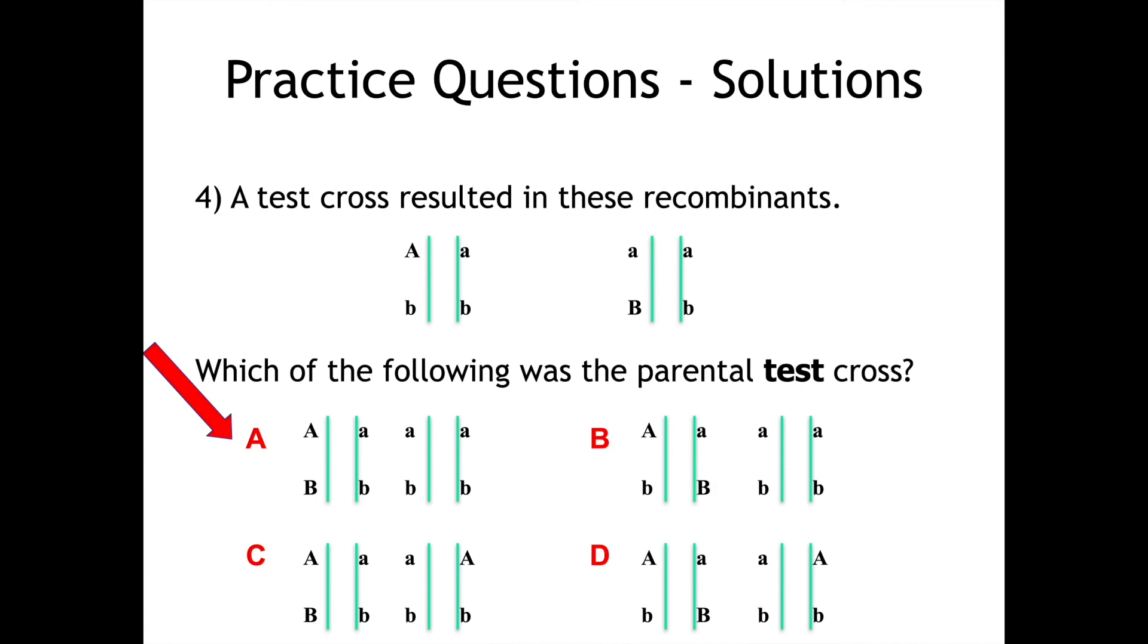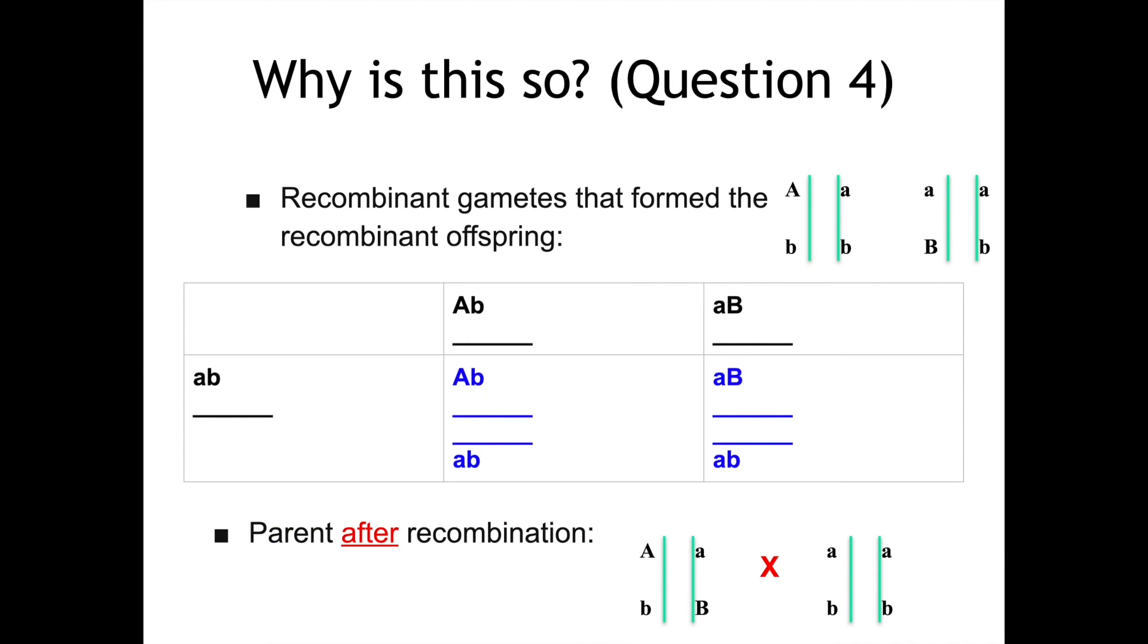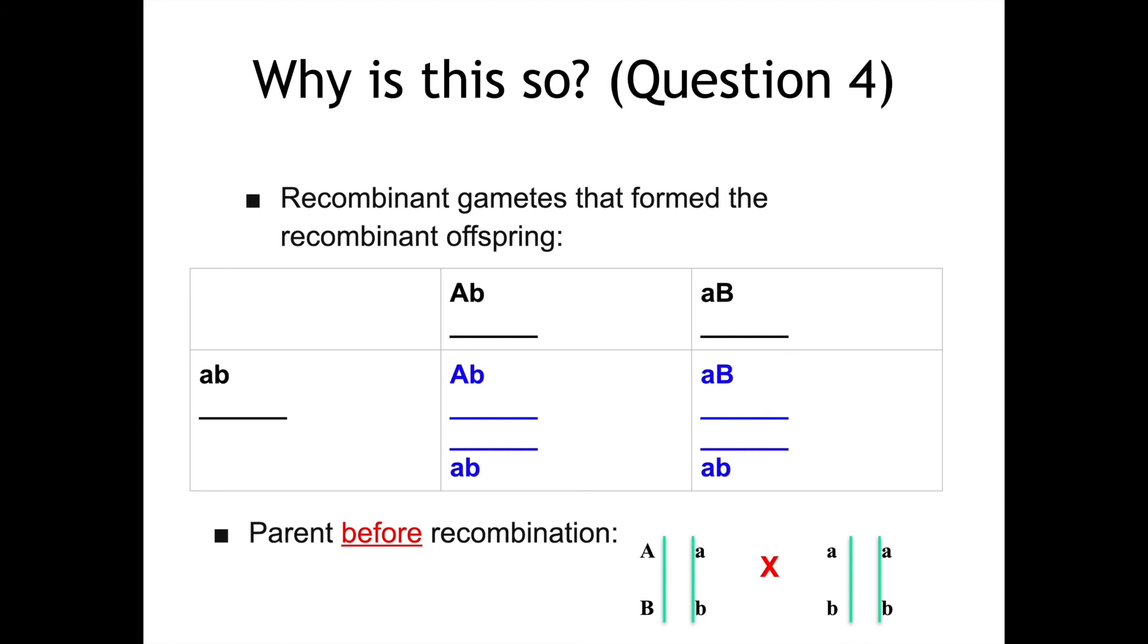And so many people make errors on this because they produce the parent as a result of the gametes from recombination, but they don't reverse the recombination. And so that's the bit that's really important. So if you put the offspring into the Punnett square, that's what we can see in blue here. Then the parents after recombination are what you see in the bottom right hand corner. But you have to reverse them. And so that is how you end up with the parents before the recombination happened.